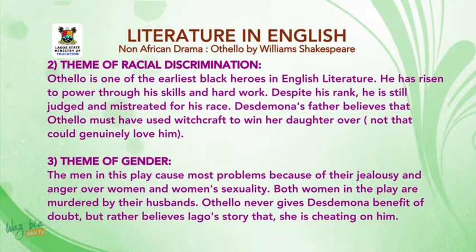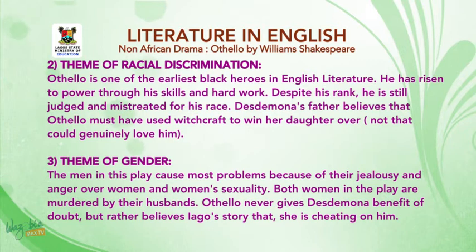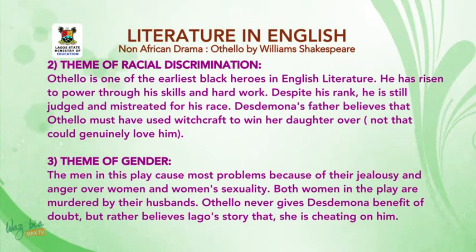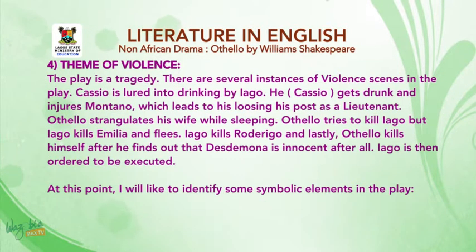The next theme is the theme of gender. The men in this play cause most problems because of their jealousy and anger over women and women's sexuality. Both women in the play are murdered by their husbands. Othello never gives Desdemona the benefit of the doubt, but rather believes Iago's story that she is cheating on him.